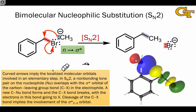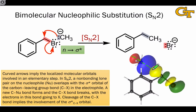The orbital interaction, as illustrated by this image, involves coaxial alignment of the non-bonding lone pair orbital — typically a hybrid — and the sigma-star orbital of the electrophile. This constitutes sigma-type orbital overlap.